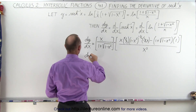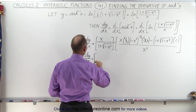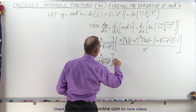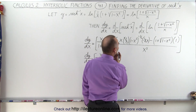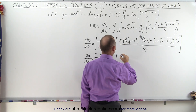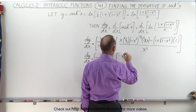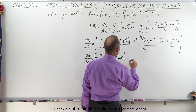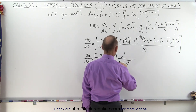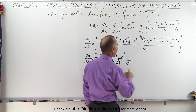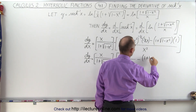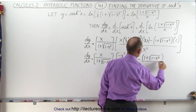So dy/dx is equal to — keeping the x divided by 1 plus the square root of 1 minus x squared out front — times: the 2's cancel, and we have x times x, which is x squared. With the minus sign, that's minus x squared divided by the square root of 1 minus x squared. Then minus the quantity 1 plus the square root of 1 minus x squared, all divided by x squared.